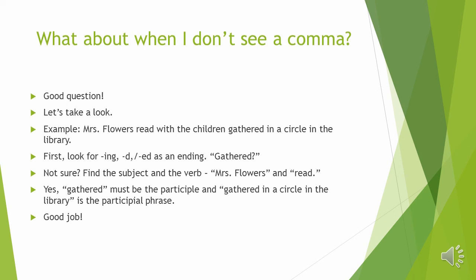But what about when I don't see a comma? Look at the example: "Mrs. Flowers read to the children gathered in a circle in the library." I'm looking for -ing, -d, or -ed endings. I see "read" — no, that's not going to work. "Gathered" — that's an -ed. Let's find the subject and verb. Mrs. Flowers is the subject; she read to the children — so that takes away "Mrs. Flowers" and "read." What's left? "Gathered" must be the participle. "Gathered in a circle in the library" is the participial phrase.